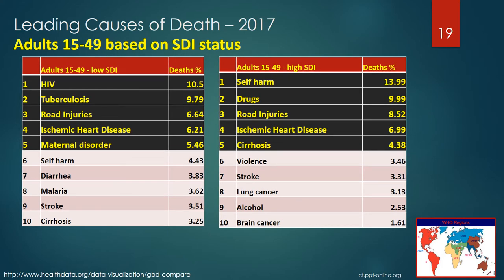These tables look at the global causes of death in adults between 15 and 49 years old based on their SDI. The leading causes of death in low SDI countries were HIV, tuberculosis, road injuries, ischemic heart disease, and maternal disorders. The leading causes of death in high SDI countries were self-harm, drugs, road injuries, ischemic heart disease, and cirrhosis. HIV and tuberculosis were the leading causes of death in low SDI countries and are not even on the top 10 list for high SDI countries. Self-harm and drugs topped the list for high SDI countries, while drugs were not on the top 10 list for low SDI countries. Maternal disorders were in 5th position for low SDI countries and not on the top 10 list for high SDI countries.